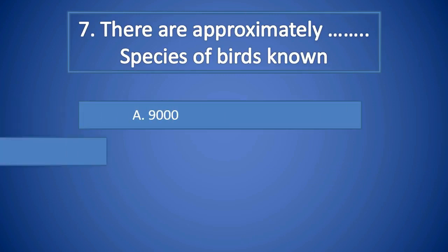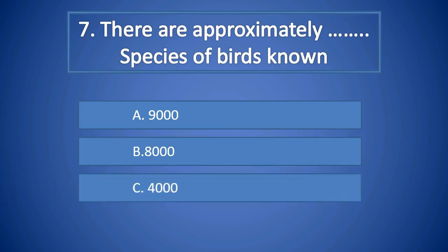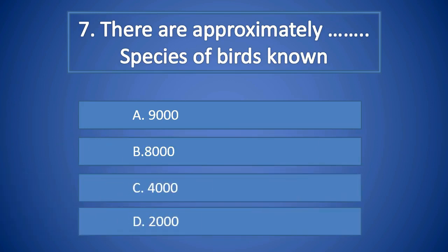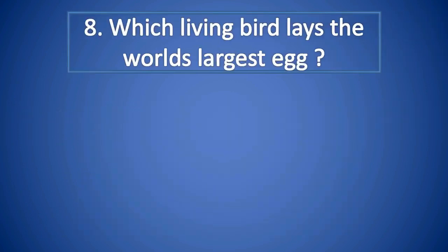Question Number 7: There are approximately how many species of birds known? A. Nine thousand, B. Eight thousand, C. Four thousand, D. Two thousand. Right answer is A. Nine thousand.